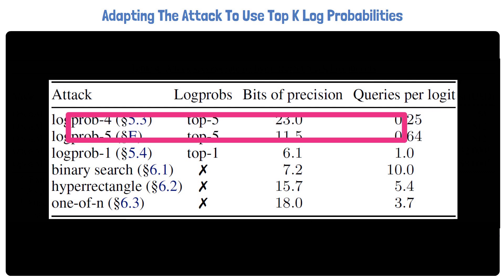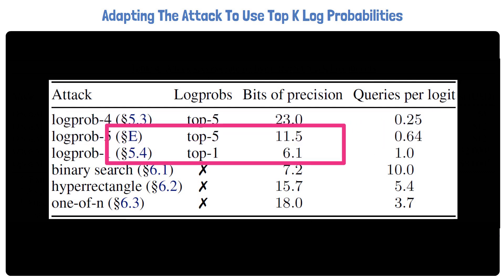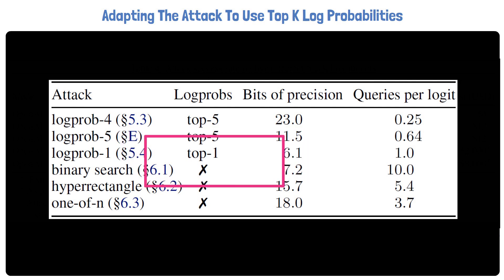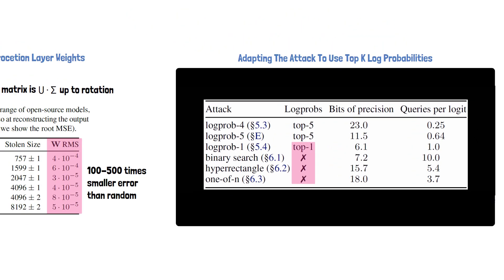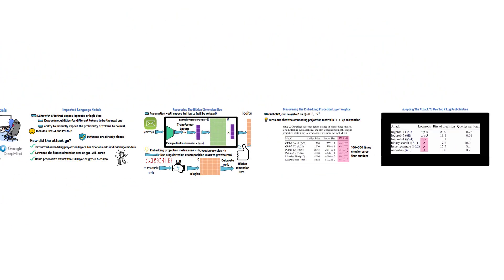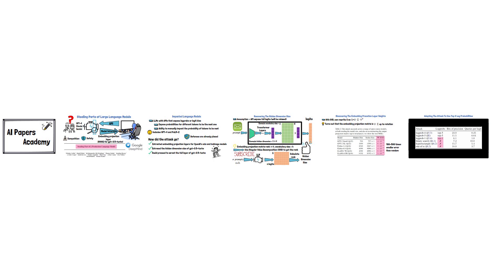Another table from the paper shows a comparison between different attack methods. We only covered the first one, which achieves the best results at the lowest cost. However, in the other methods the researchers show how the attack is possible when there is only one log probability in the API result or none at all, just with lower precision and higher cost. Thank you for watching and stay tuned for more reviews of AI papers.